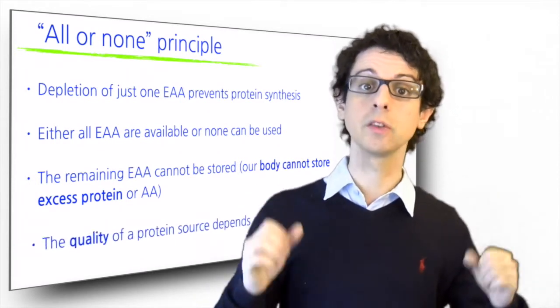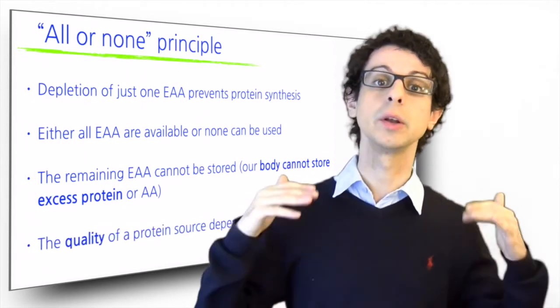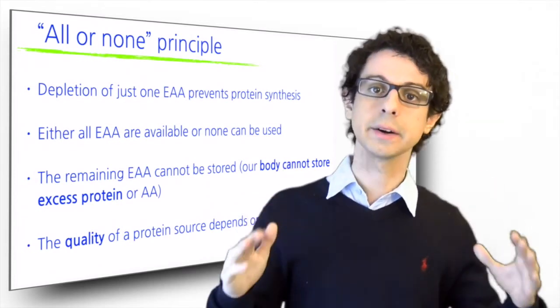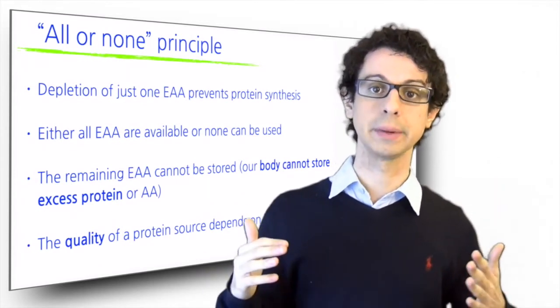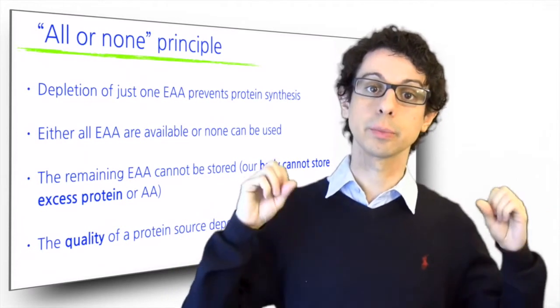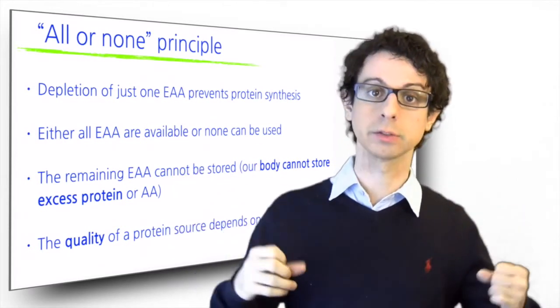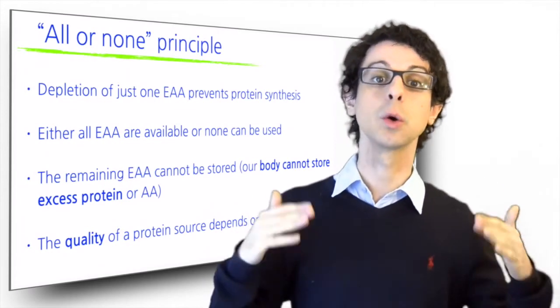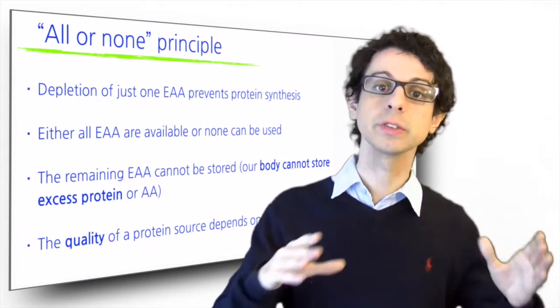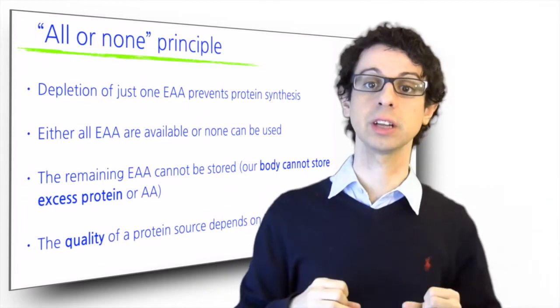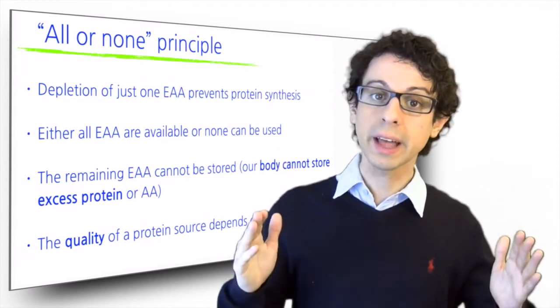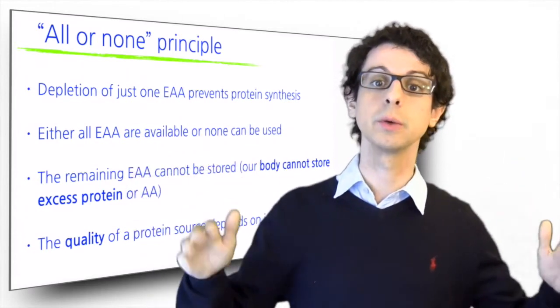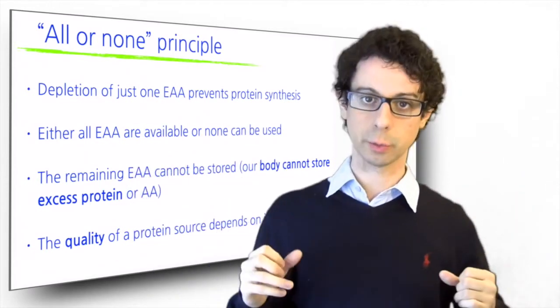And so the quality of a protein source depends on its essential amino acid content. As we will see later when we discuss protein requirements, we have a requirement for protein quantity, which is how many grams of total protein we need. But we also have a requirement for protein quality, meaning we want to make sure that we have all the nine essential amino acids, because if we don't have all of them, then we can have all the protein we want, it's protein we won't be able to use for protein synthesis.